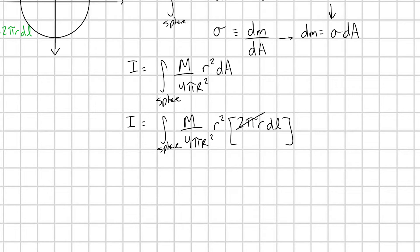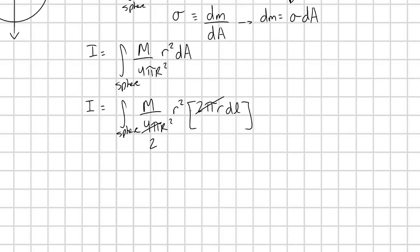And we're already going to start to get some cancellation here. And of course, these r's are going to pair up and make an r cubed. I'm going to pull my constant out of this integral. So I'm going to have m over 2 r squared integral over my sphere of r cubed dL.